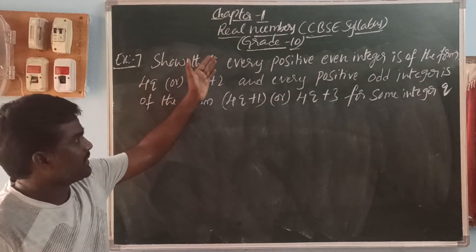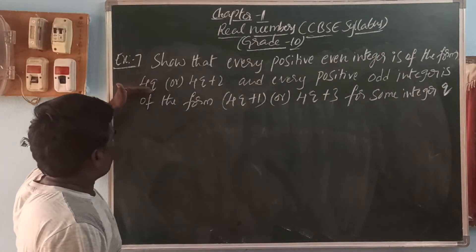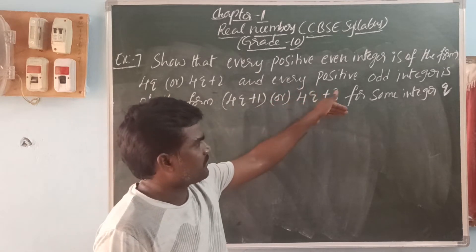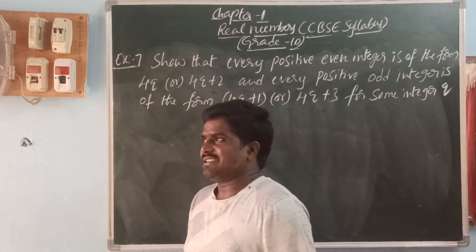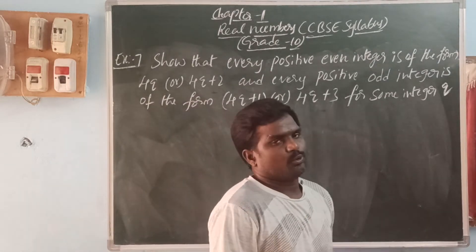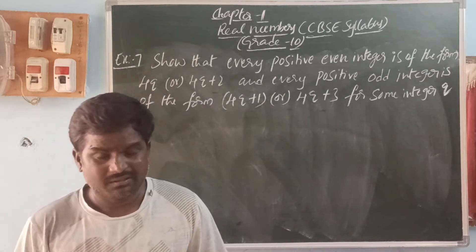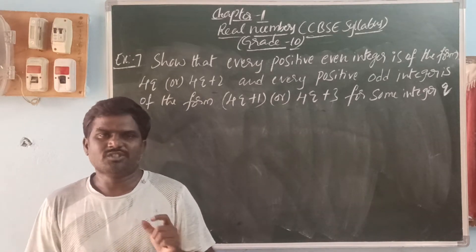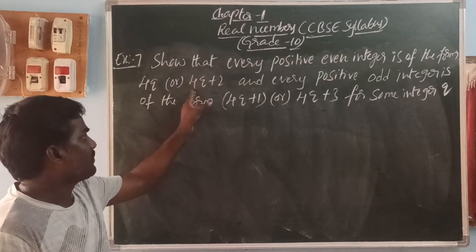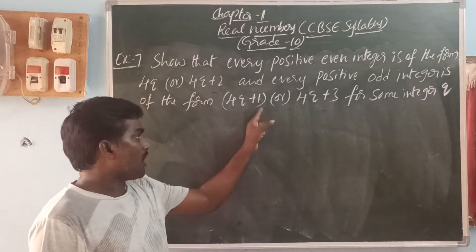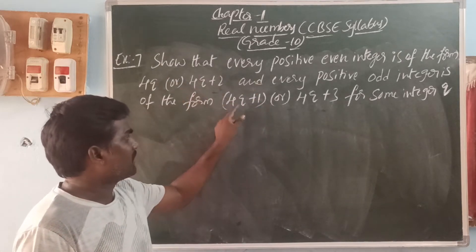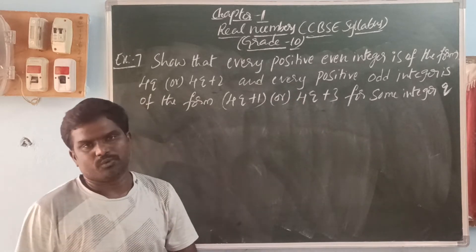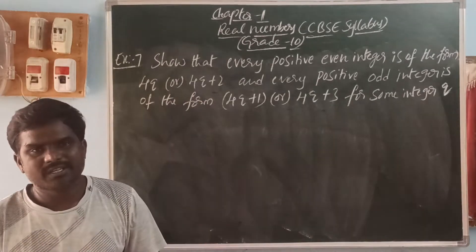Next, show that every positive even integer is of the form 4Q or 4Q plus 2, and every positive odd integer is of the form 4Q plus 1 or 4Q plus 3 for some integer Q. Even integer means multiples of 2. 4Q means multiples of 4, which is divisible by 4. 4Q plus 2 means divided by 4 with remainder 2. 4Q plus 1 means divided by 4 with remainder 1. 4Q plus 3 means divided by 4 with remainder 3. So the divisor here is 4. We can prove this by using Euclid division lemma.